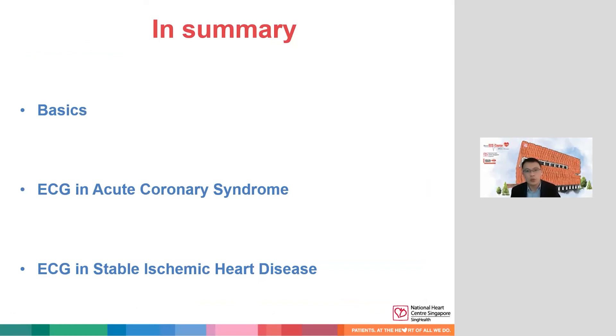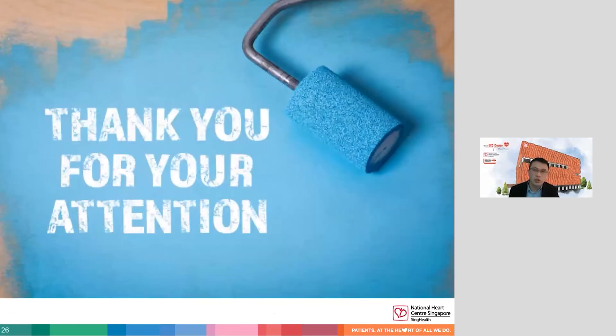In summary, we've covered the basics of coronary anatomy, ECG interpretation in acute coronary syndrome, high-risk ECG patterns and STEMI equivalents, LBBB and the Sgarbossa criteria, and ECG findings in stable ischemic heart disease. Thank you for your attention.